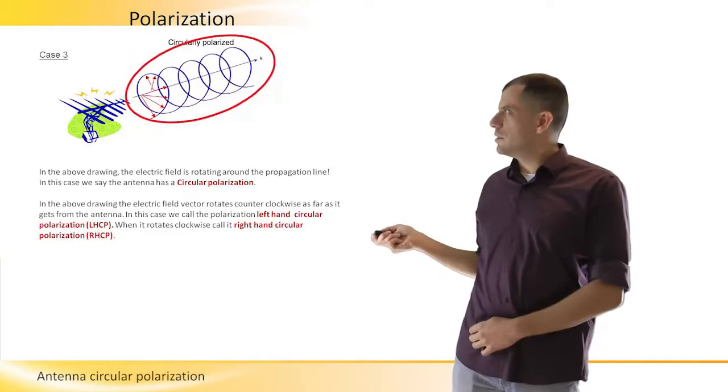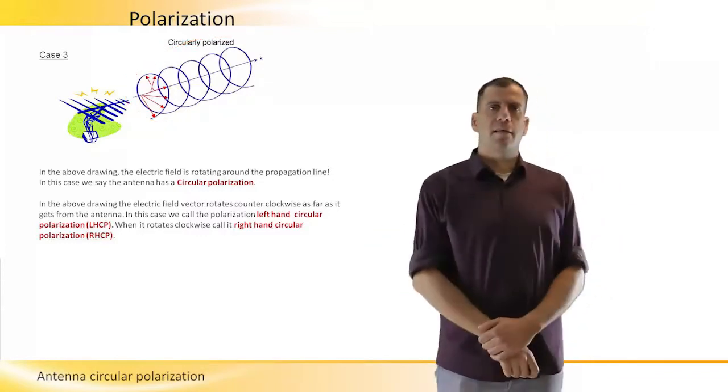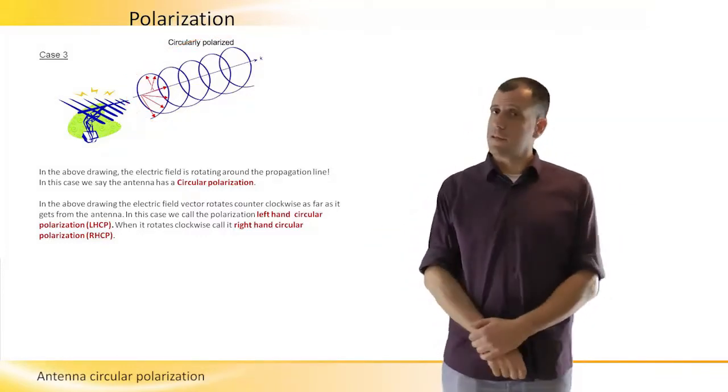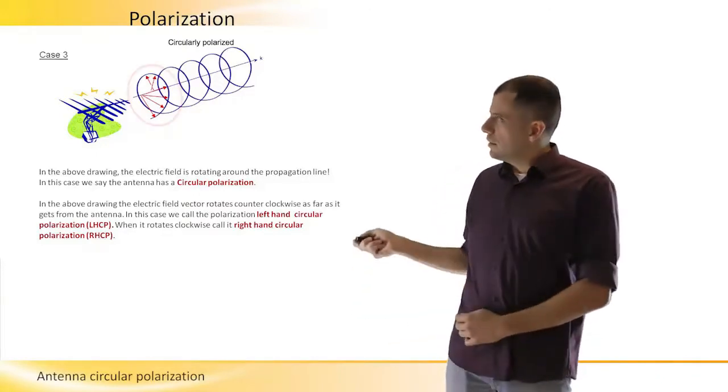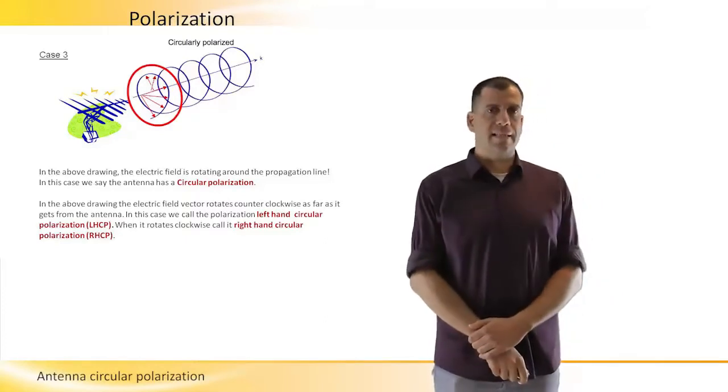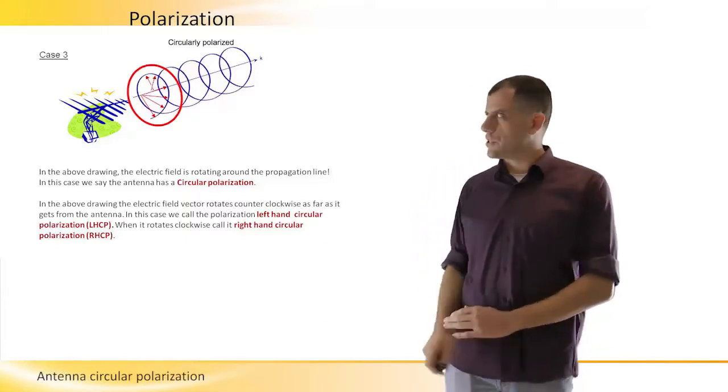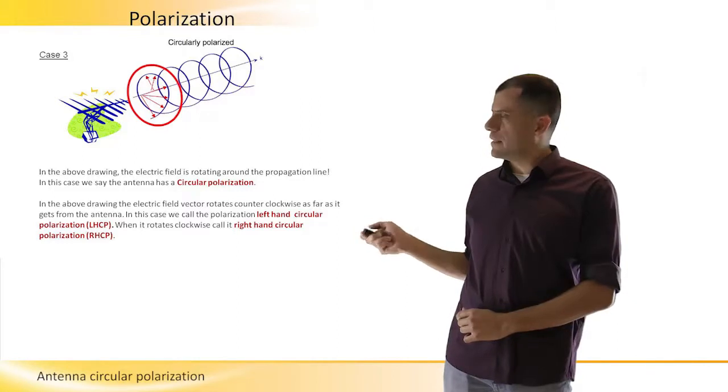The next case that I want to present here is the circular polarization. Circular polarization is a case where the magnetic and electric fields are still perpendicular, but in this case the electric field magnitude stays the same, but the direction is changing. The vector changes its direction as it propagates away from the antenna.